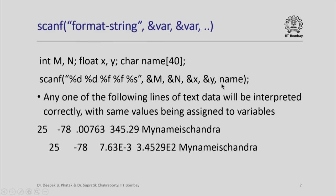Why have we not used &name? Because name is a character array of 40 characters, and the name of the array itself is a pointer, so we need not say &name. If I give input in any of these formats, scanf will correctly associate values to the variables. Notice that cin would have accomplished the same thing, but scanf does it as per our format specification, and the same format specification works even with differently spaced input. However, scanf has special features that cin cannot replicate.